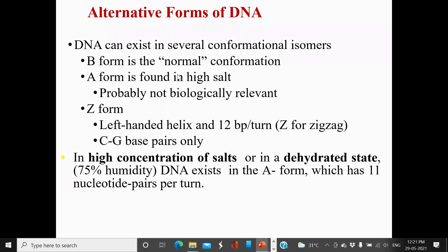What are the different forms of DNA? DNA exists generally in three forms. The B form is the normal form — it is present in normal cells naturally and exists in all living organisms. But the A and Z forms are artificial. These forms are obtained under higher salt concentrations.